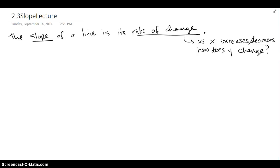The slope of a line is basically a rate of change, so as x increases or decreases, what really happens to the y values? How do the y values change?